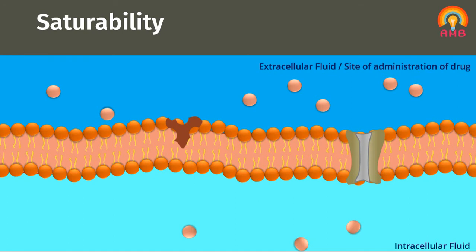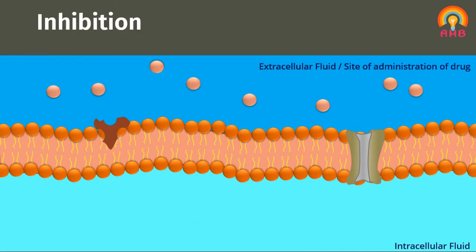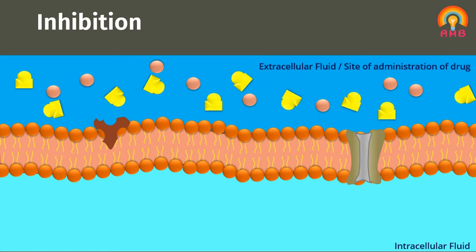Next, we are going to discuss inhibition. Inhibition means stopping or blocking of the transportation process. If two drugs have a somewhat similar structure, one drug binds to a carrier molecule and stops or opposes the binding of the other drug with the same carrier molecule. This is called inhibition. Hence, wherever a carrier is involved, there is specificity, saturability, and inhibition.